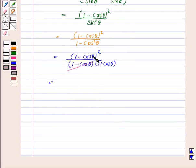So 1 minus cos theta gets cancelled with 1 minus cos theta, and we are left with 1 minus cos theta upon 1 plus cos theta. This is what we have to prove. Hence LHS is equal to RHS.